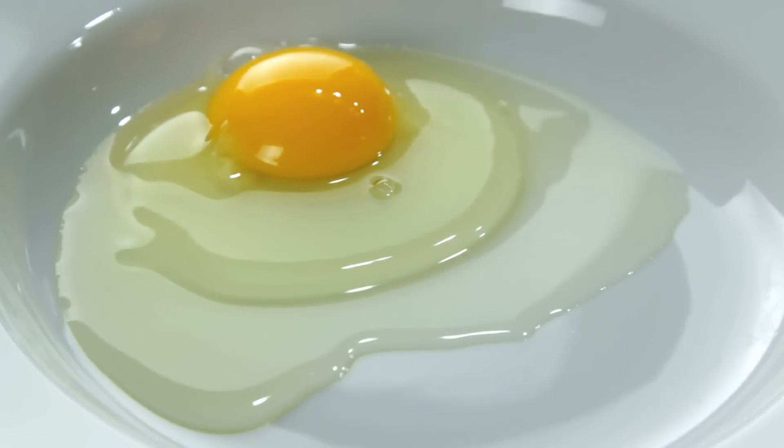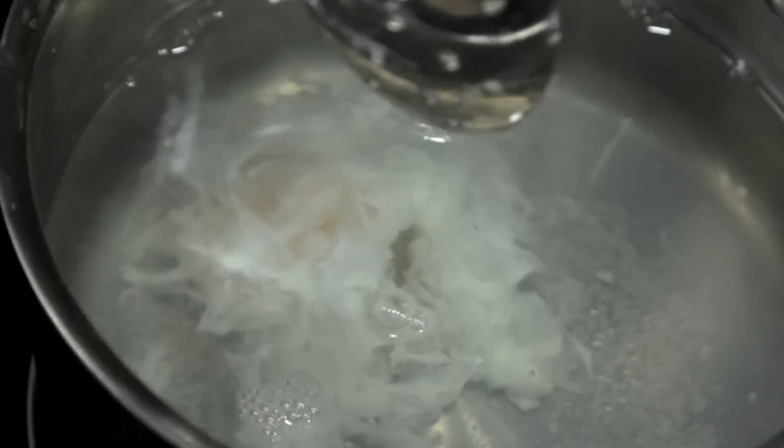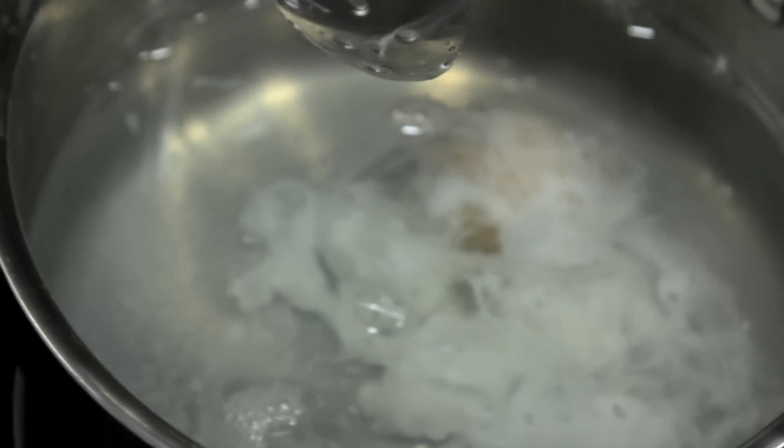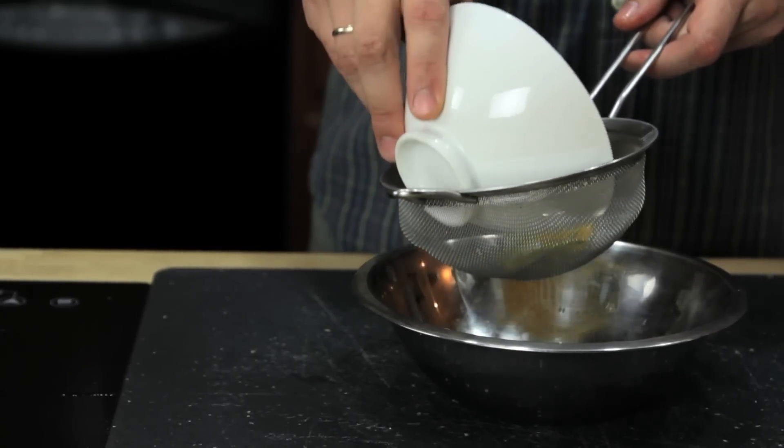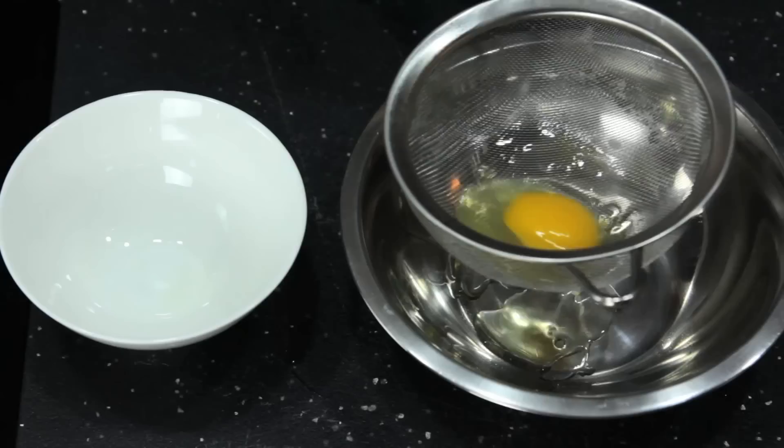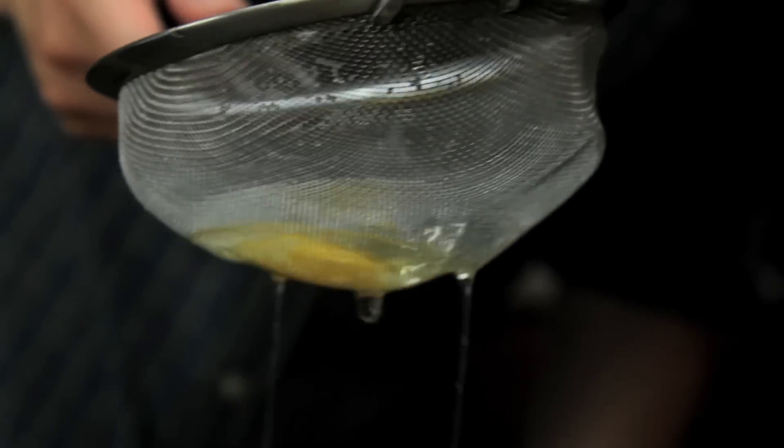You see, no matter how fresh your eggs are, there's always going to be some amount of liquid white. It's this excess white that causes misshapen eggs. You know, those really ugly ones with the wispy white floaters that completely ruin your brunch. To get rid of them, we're going to transfer our eggs to a fine mesh strainer and gently swirl it around until all the excess white is drained away.